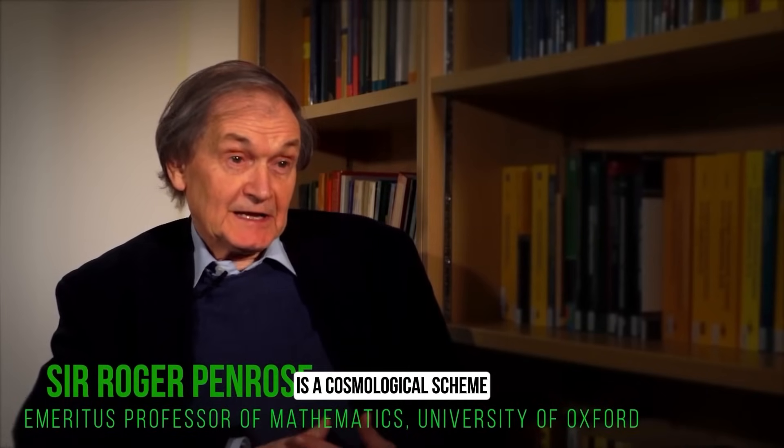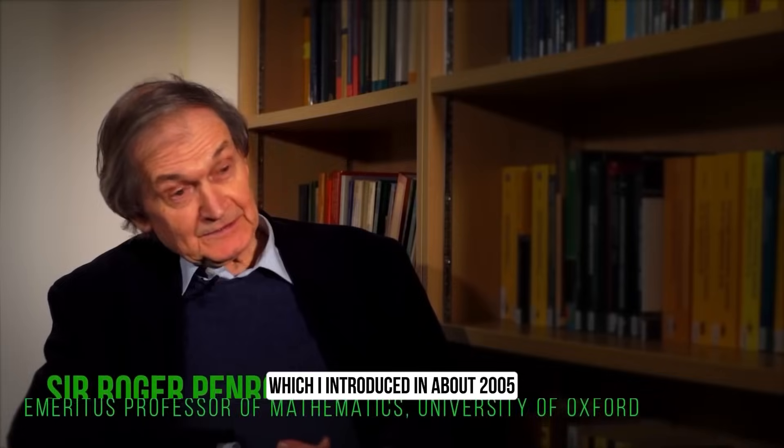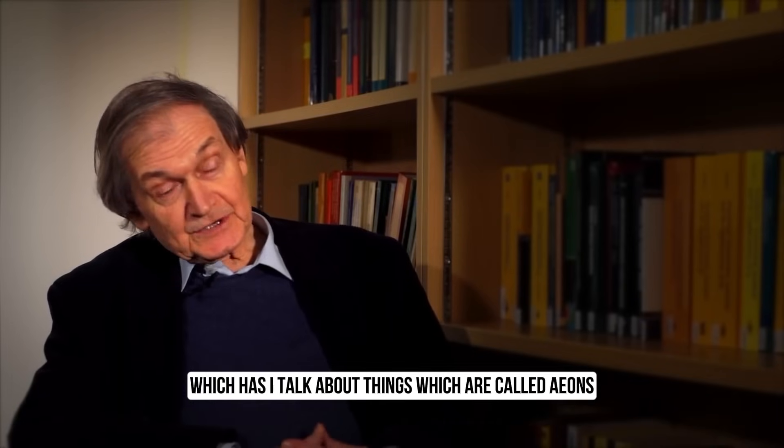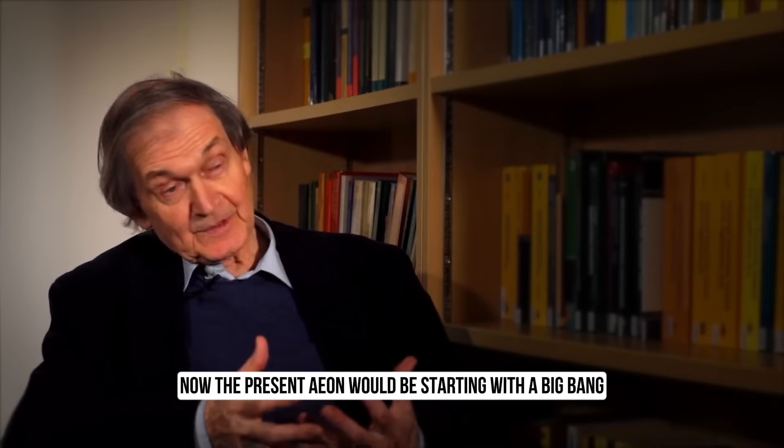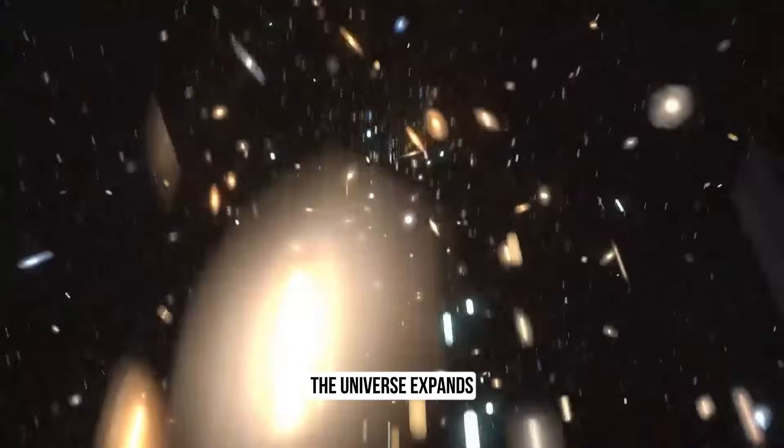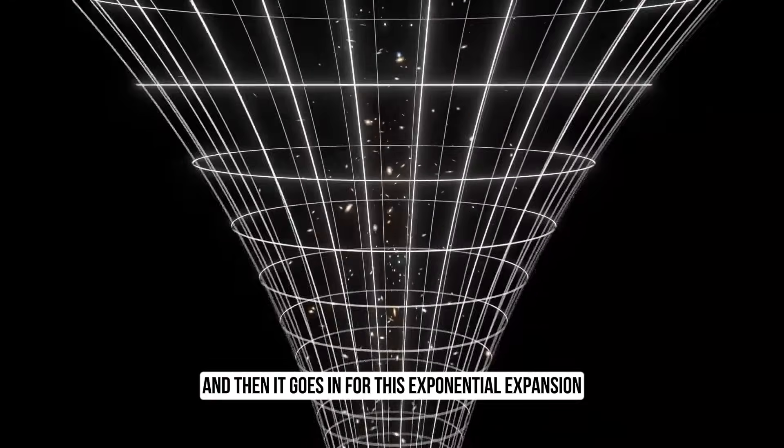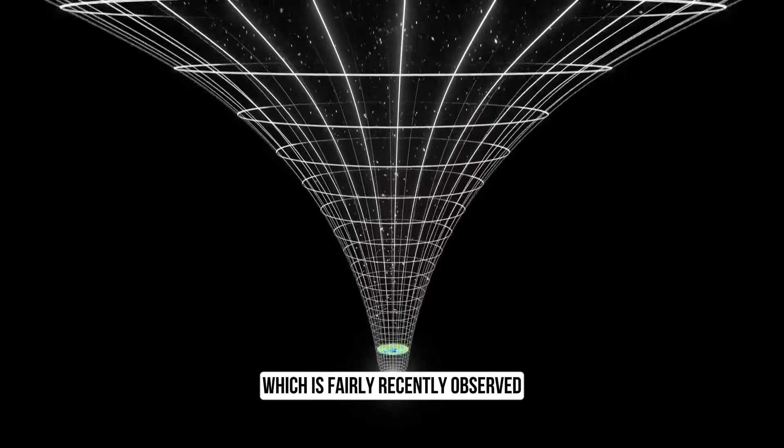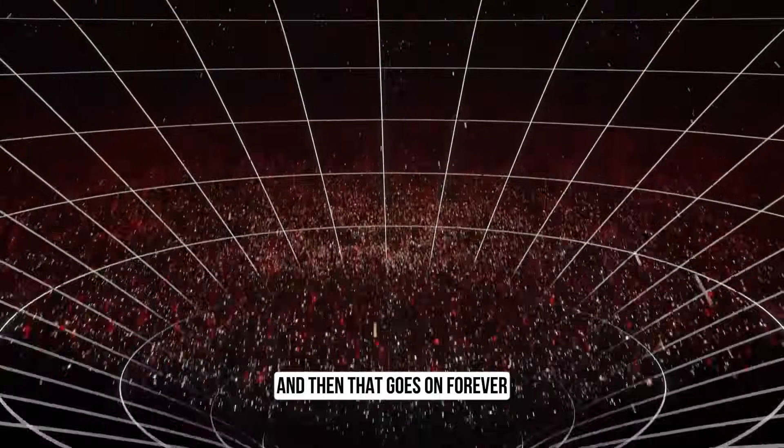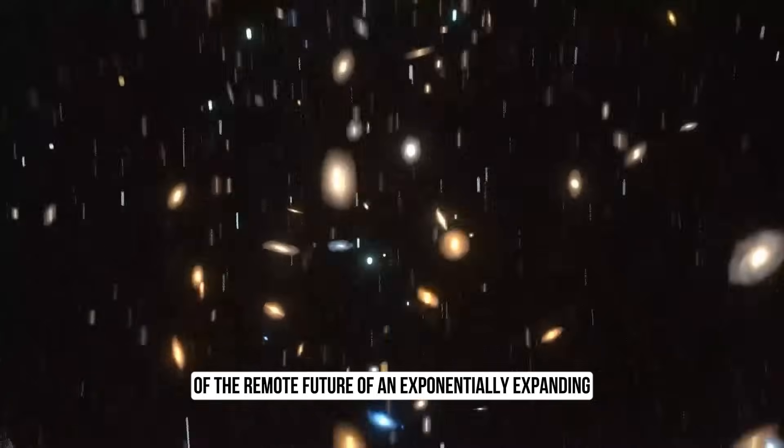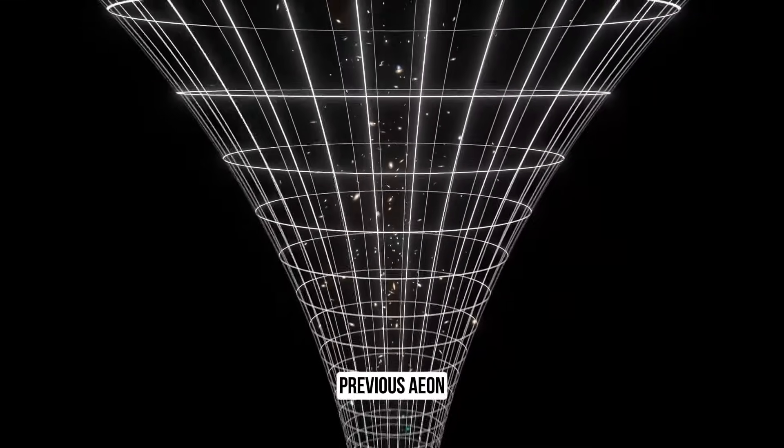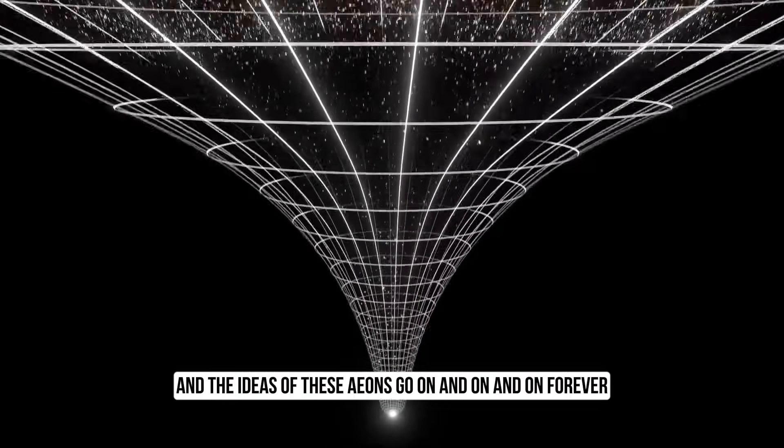Conformal cyclic cosmology, or CCC as I sometimes call it, is a cosmological scheme which I introduced in about 2005. I talk about things which are called eons. A present eon would be starting with the Big Bang. The universe expands, and then it goes in for this exponential expansion, which is fairly recently observed, and then that goes on forever. This remote expansion is physically equivalent to another Big Bang. And our Big Bang was the continuation of the remote future of an exponentially expanding previous eon. And the idea is that these eons go on and on and on forever, in both directions.